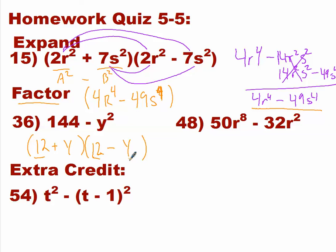So now we have 50r to the eighth minus 32r squared. This one is a little bit more difficult, so let's go through what we're looking for in a difference of squares. First, is it a binomial? Yes — it has two terms. 'Bi' meaning two — binomial, two terms. Is it a difference? Yes. The last thing is: do we have perfect square terms on either side? No, we don't. But wait, there's more. A couple days ago we talked about factoring out a greatest common monomial.